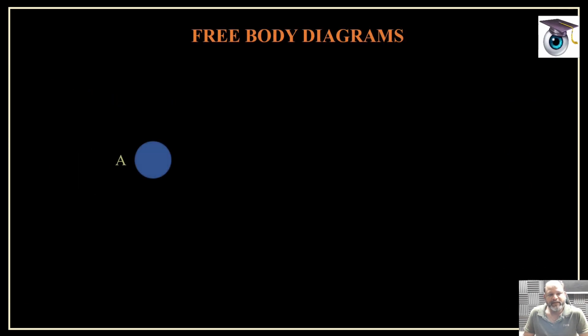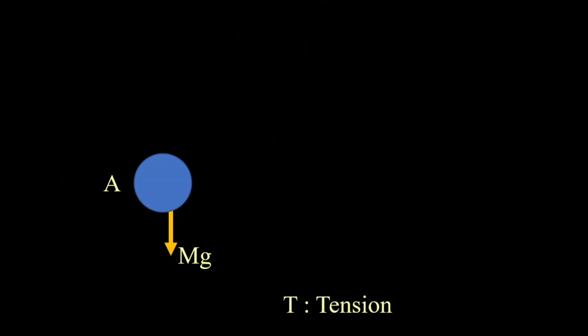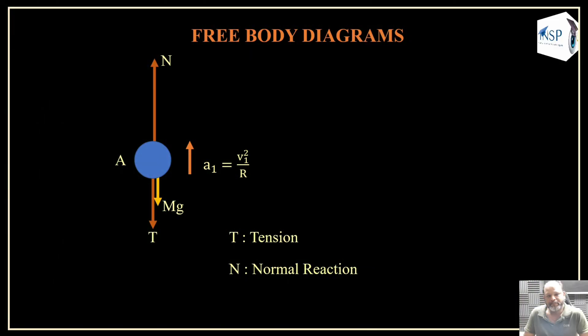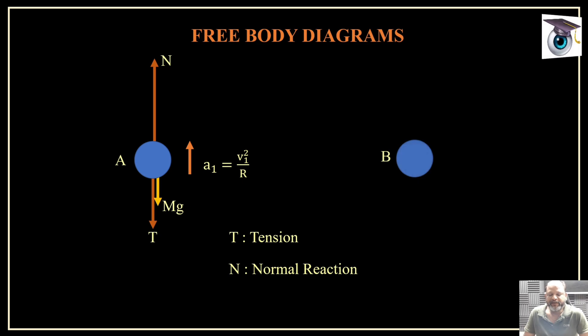Now if you draw the FBD of both mass A and mass B, we have Mg, then the tension T which is acting downward, and the normal reaction which is acting in the upward direction. This is the situation for ball A and its acceleration, since it is moving in a circle, its acceleration will be a1 which is v1 squared by R. Now here on B if you see, we have mg, then tension T, and pseudo force Fp, and a2 is the acceleration of B with respect to A which is going to be, since it is circular path, v2 minus v1 whole squared by L.